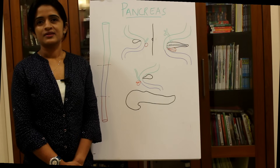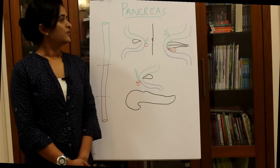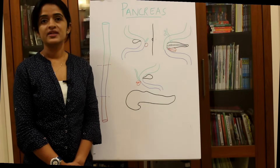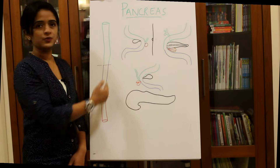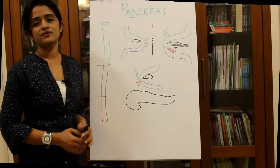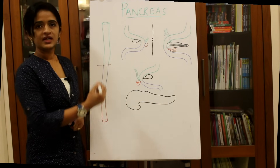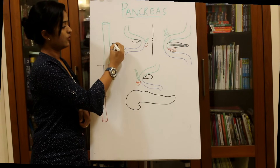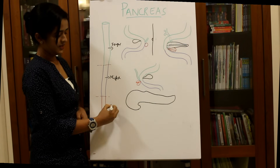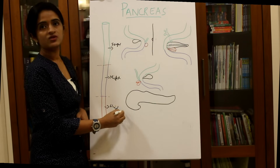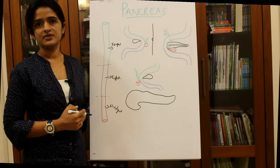Let's discuss the development of the pancreas, which is a very important topic for UGI and PG exams. The gastrointestinal system is developed from the endoderm. In the beginning stages, the endoderm forms a tube-like structure from which the derivatives of the gastrointestinal system develop. This tube forms three parts: the foregut, the midgut, and the hindgut.